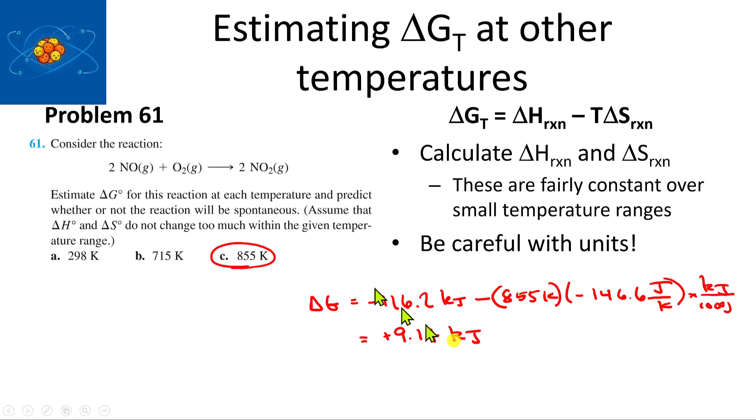Does it make sense that it's non-spontaneous at higher temperatures? One thing that would indicate that is if you have a decrease in entropy during the reaction. You'll notice there's two moles of gas in the products and three moles of gas in the reactants, so delta S is negative, and the result is that at higher temperatures it becomes less spontaneous.